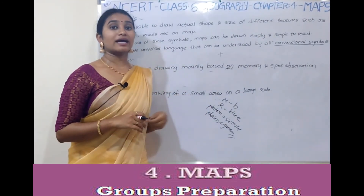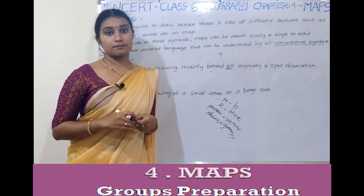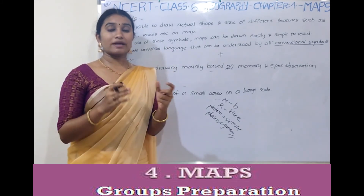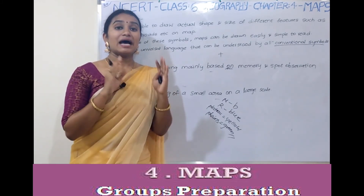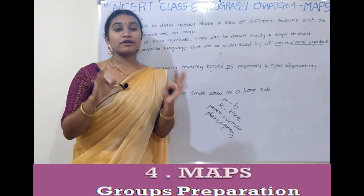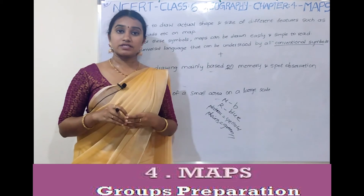In Africa too, water bodies are represented in blue, and mountains in yellow. There is an international agreement on symbols, and we call them conventional symbols. These symbols are also called conventional symbols. Maps have a universal language.